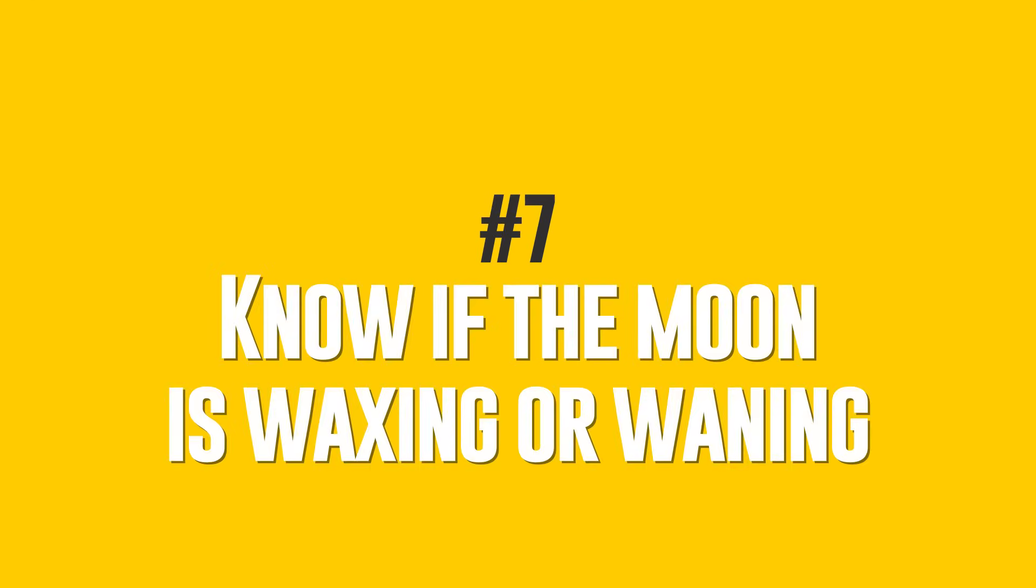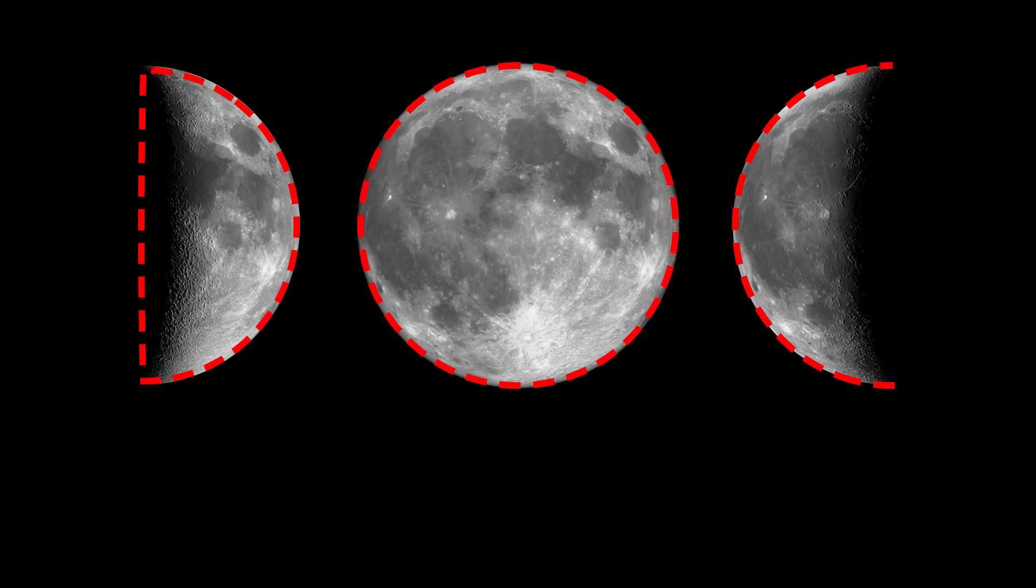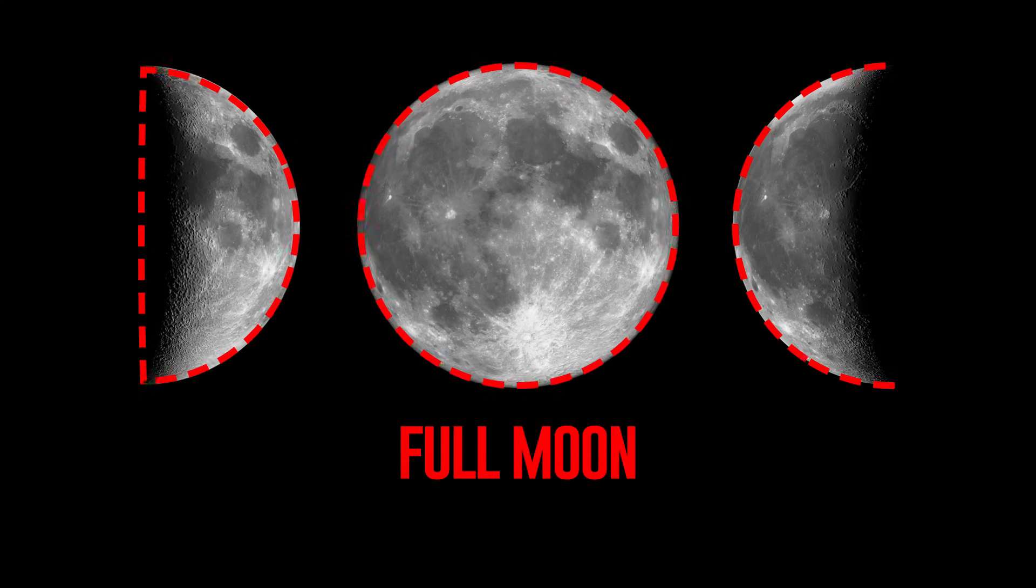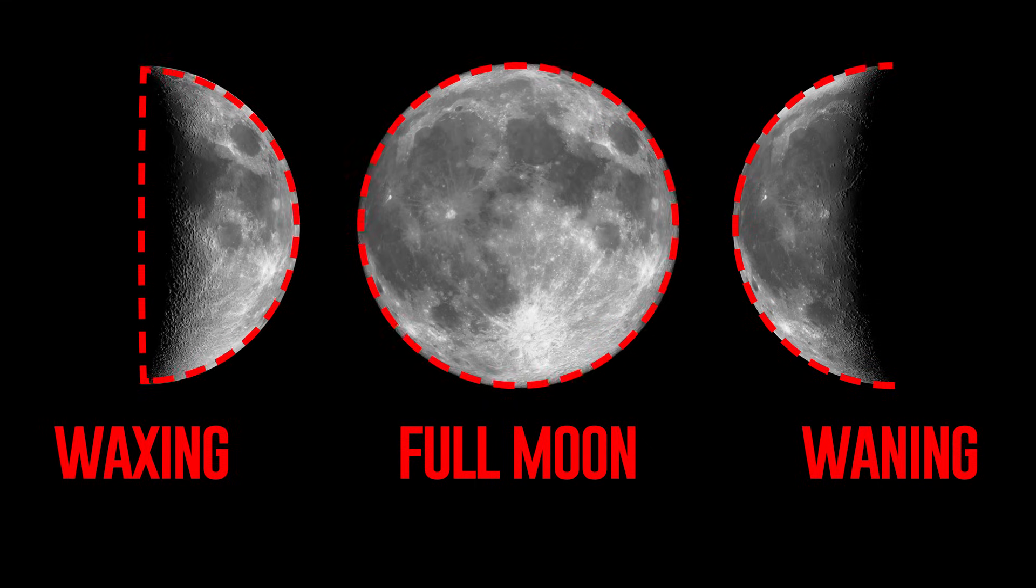Number 7: Know If The Moon Is Waxing Or Waning. To determine the moon phase easily, use the shape of the letters D, O and C. The full moon is O, the first quarter is D and the third is C. In other words, the letter C means waning and the letter D, waxing.